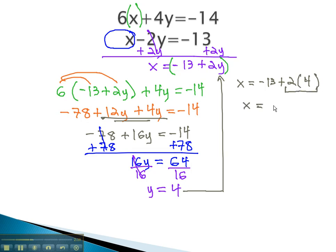Multiplying, we find x is equal to negative 13 plus 8, or x is equal to negative 5.